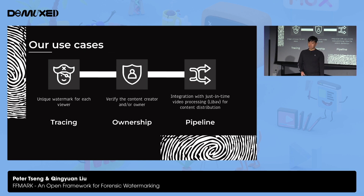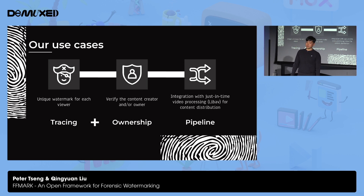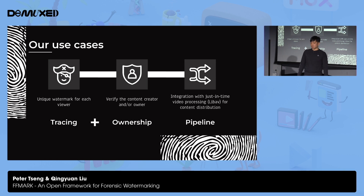And if you have blockchain-backed content, the watermark might contain the address of the current owner on the blockchain. If the content is traded or sold, you would watermark with the new owner's address and so on. We want to have both tracing and ownership at the same time, so ideally we can layer multiple watermarks together on the same video. The last need is to fit watermarking within our existing software architecture — we have a just-in-time video processing pipeline for content distribution, where much of our transcoding occurs on demand or using edge compute. Watermarking needs to work with this, and probably needs to be a C library to work with AVLib.